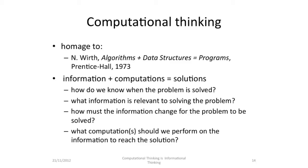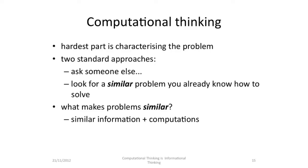Computational thinking is a very rich homage to Nicholas Wirth's 'algorithms plus data structures equals programs.' I think now we can say information plus computation is a solution. Some questions we can ask are: how do we know when a problem is solved? What information is relevant for solving a problem? How's the information got to change for the problem to be solved? And what computations should we perform on the information to reach the solution? The hardest part is characterising the problem.